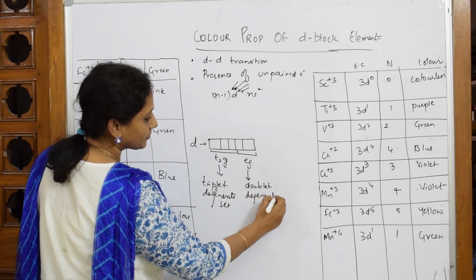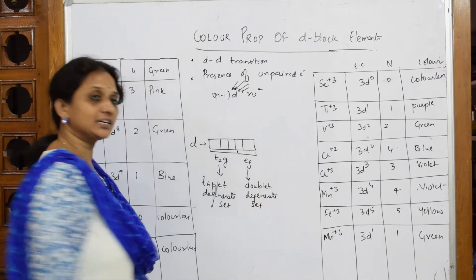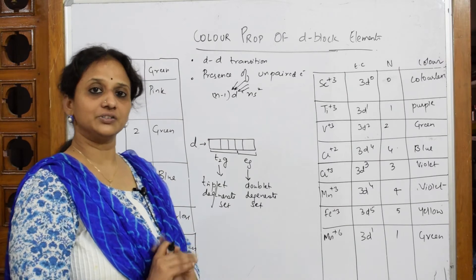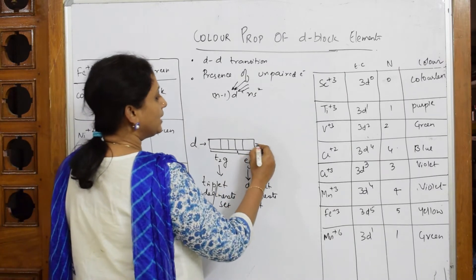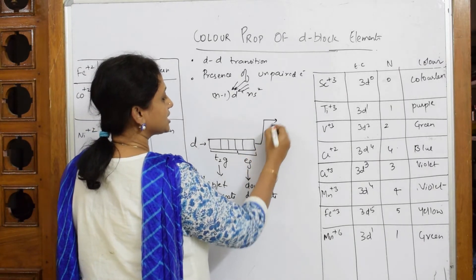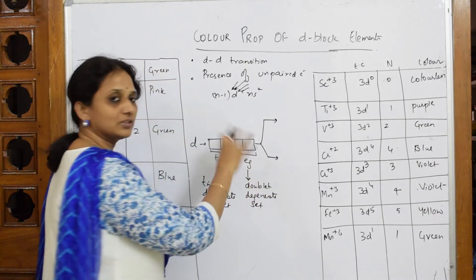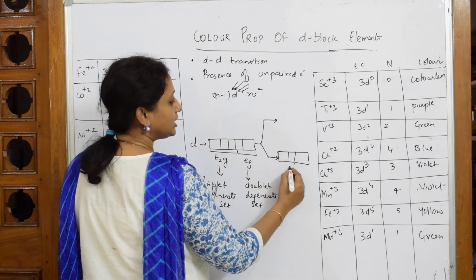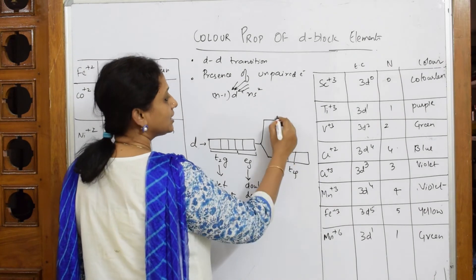What is degenerate? Degenerate means orbitals which are all of equal energy - all five are of equal energy. When this is exposed to light, it's going to break up into two sets: t2g set at the base and eg set above.